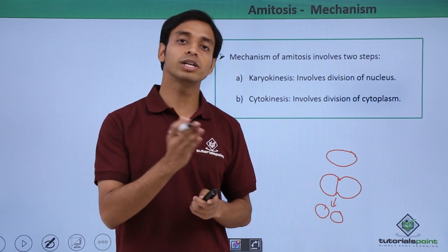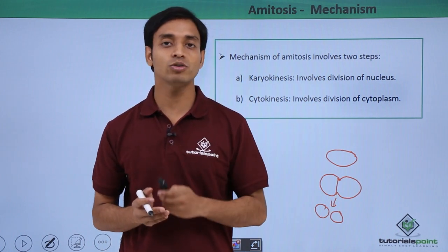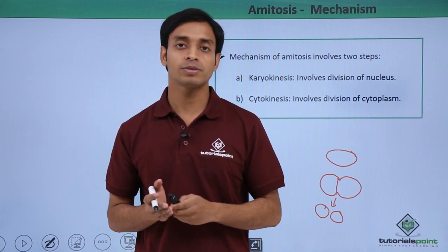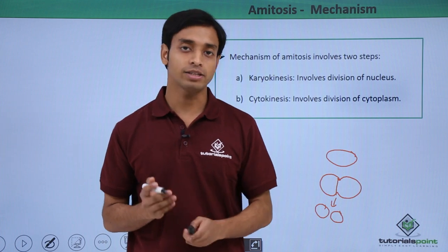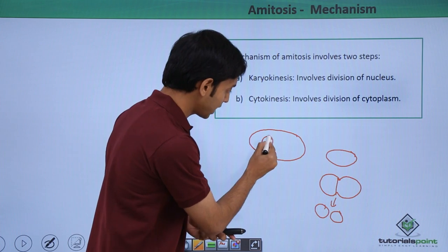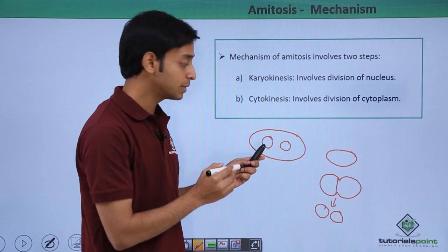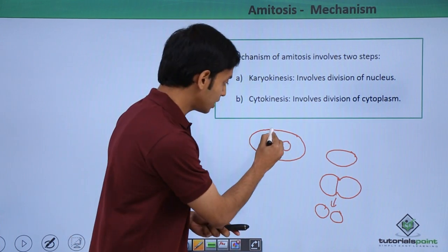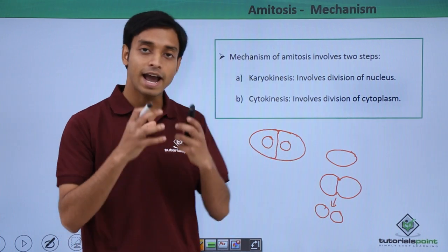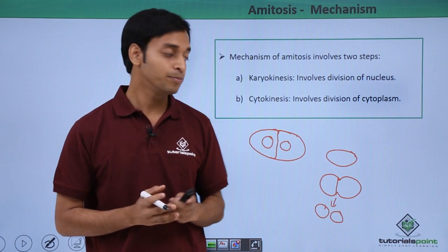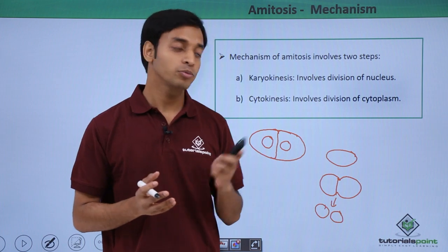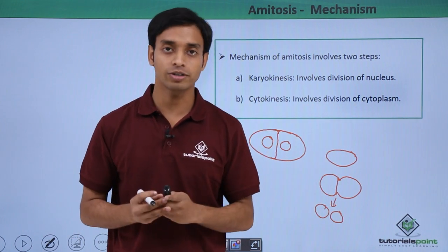After karyokinesis, that is nuclear division, it is followed by cytokinesis, which is the cytoplasmic division. This also performs in a similar way. After karyokinesis the cell has two nuclei, and the plasma membrane starts deepening inward, then divides, and the cell splits into two new daughter cells. The nuclear membrane has not dissolved, but the cell has divided into two new daughter cells.